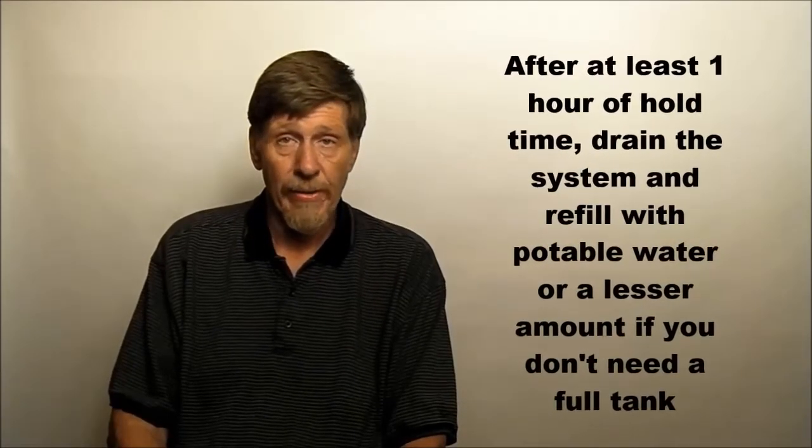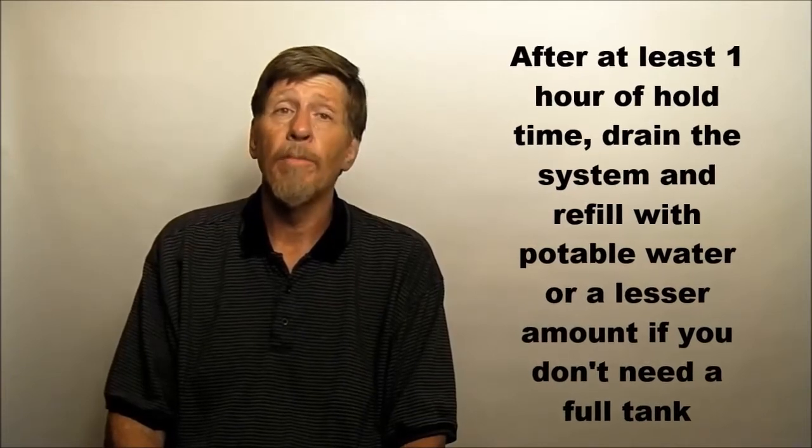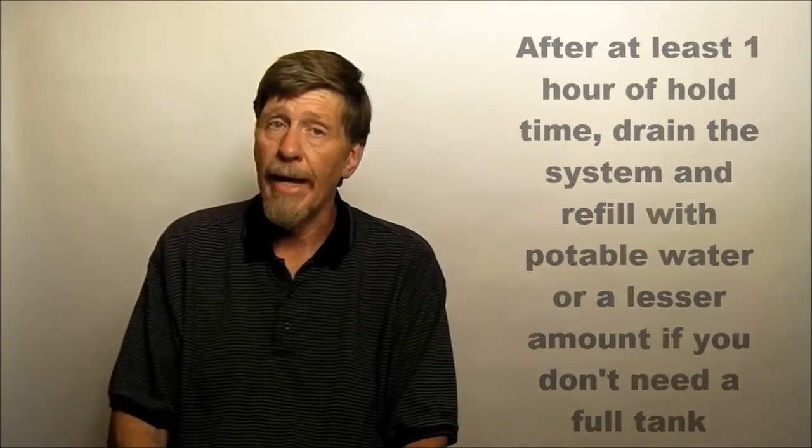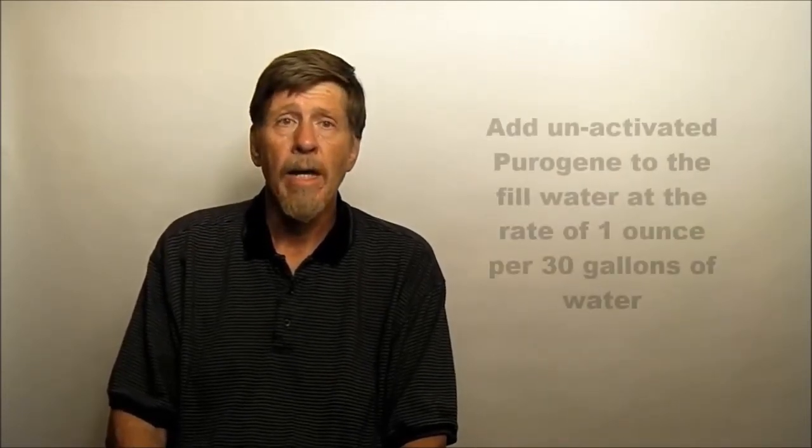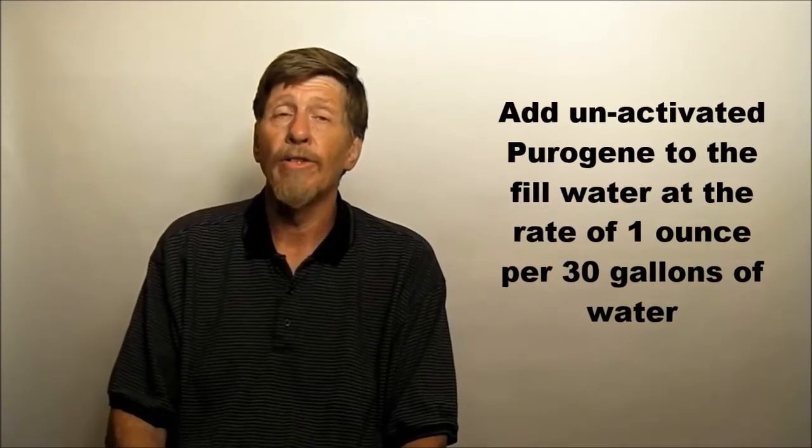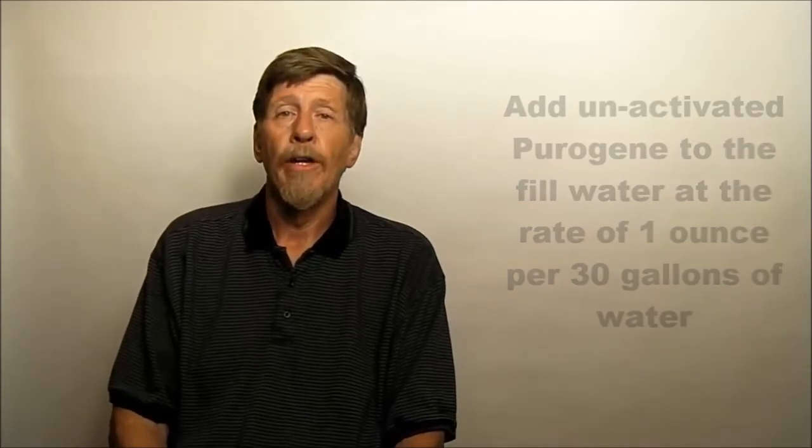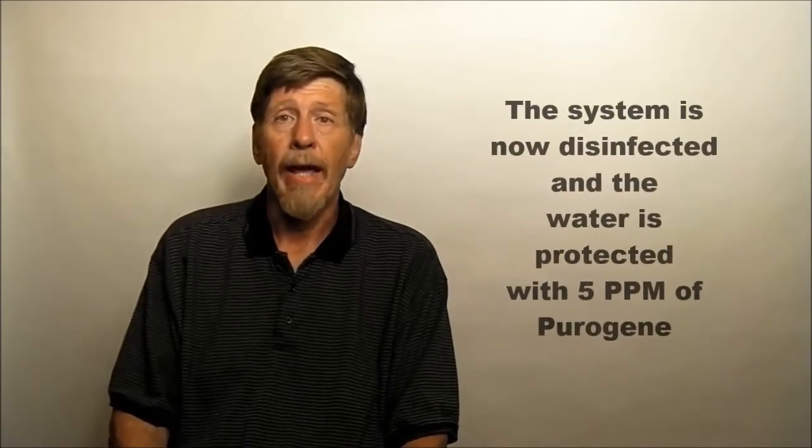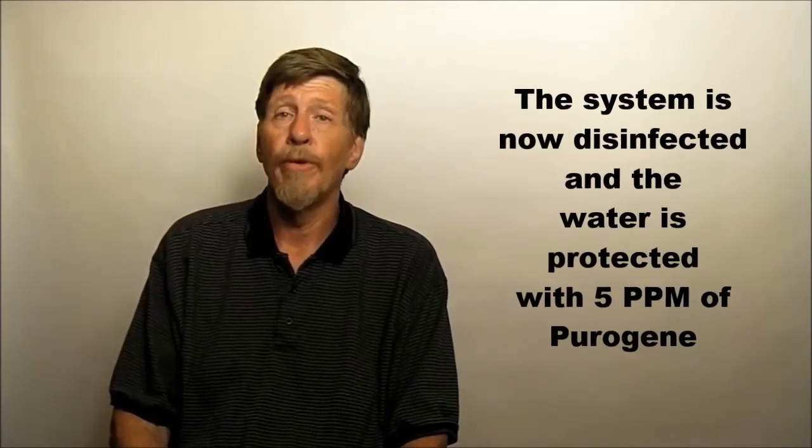After the dwell time, drain the system. Refill the system with potable water or if you don't need a full tank, with any amount you desire. Add Purigene, this time unactivated, to the fill water at a rate of 1 ounce for each 30 gallons. Your system is now disinfected and the water in the tank is protected with Purigene.